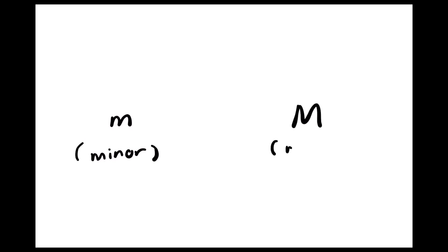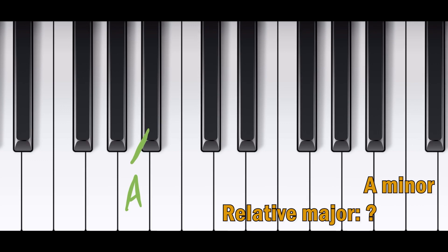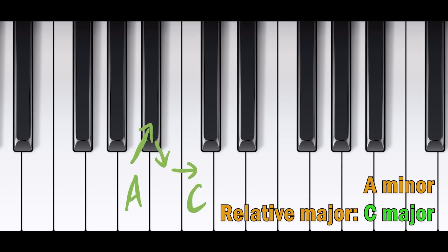Now I will show you how to find the relative major from the relative minor. Again, it's not as difficult as you think. The process is quite similar, but this time you count three semitones upwards from the relative minor. So if I'm in A minor, counting three semitones up gives us C major — the relative major of A minor is C major.